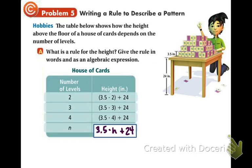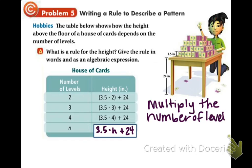Now we just need to write that as a rule in words. We are going to write, multiply the number of levels by 3.5 because that is the height of each level. And then we are going to add 24, which is the height of the table below. So that is what it asked for. It asked for an expression and it also asked for the expression in words. So example 5 is done. And as you can see on your note sheet, there is a lesson check below. But you can wait to do that until we do this lesson in class together.